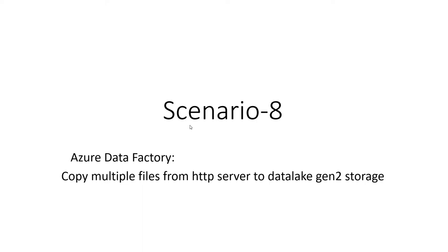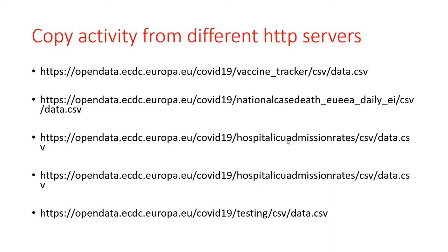Welcome to Azure Data Factory real-time scenarios. Scenario H: copy multiple files from HTTP server to Data Lake Gen2 storage. I have multiple websites, and from those websites I have different files. The part from here to here is called the base URL, and the remaining part is called the relative URL.